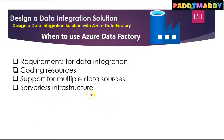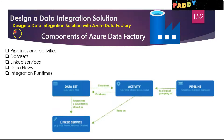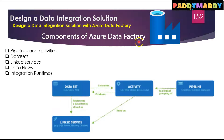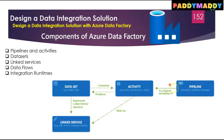Let's look at the components of Azure Data Factory — there are five different components. The first is pipelines and activities. A pipeline is a logical grouping of activities that perform a task, where each activity is a single processing step. Data Factory supports data movement, data transformation, and control activities.